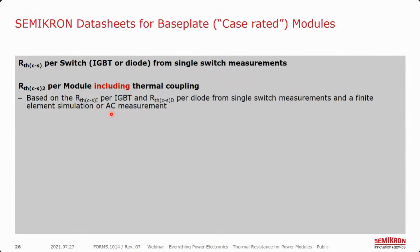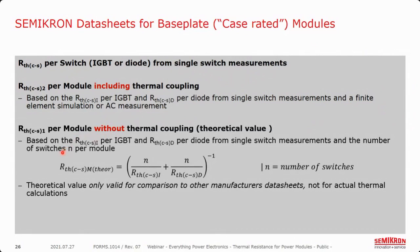Lastly, we've also provided in our data sheets the theoretically derived module-level thermal resistance that some other module manufacturers provide. This value is given so that R-module can easily be compared to another manufacturer's device — you can calculate it from the individual per-switch measurements as shown. But this R-theta case-to-sink subscript one value is only valid as a point of comparison between our data sheet and another manufacturer's data sheet, and really shouldn't be used for actual thermal calculations, because as we discussed, it's lower than any real thermal resistance you would measure.